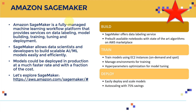Amazon SageMaker doesn't stop at the labeling part. It helps you build the model — there are tons of built-in algorithms within SageMaker. It helps you train, tune, and deploy the model as well, managing the entire workflow end-to-end. You can go from raw photos all the way to deploying a model in practice.